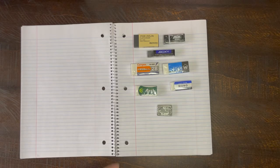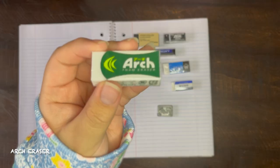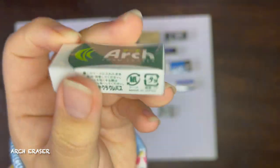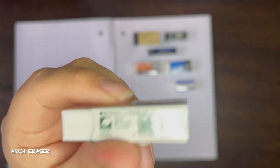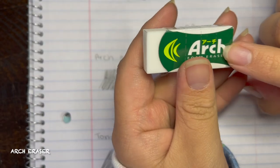Next up we have the Sakura Arch foam eraser in 60. This one is a fan favorite. A lot of people in this community know this one. The sleeve is what I really like about it because it has these indents so that you can rip it when the eraser becomes too short.